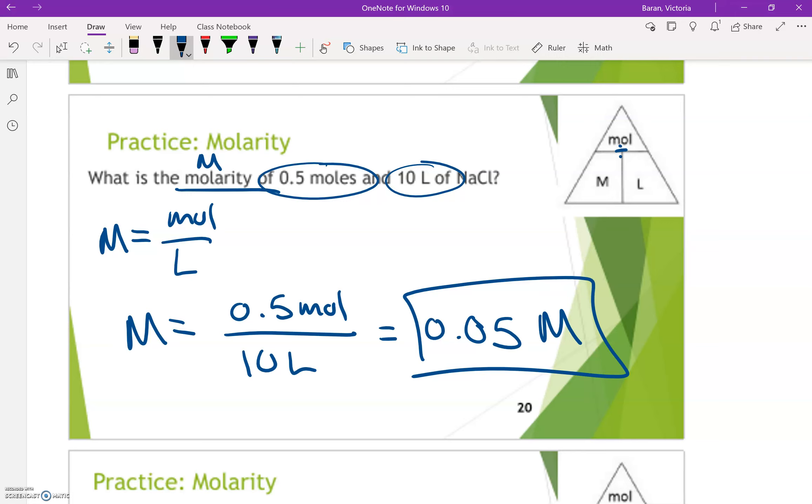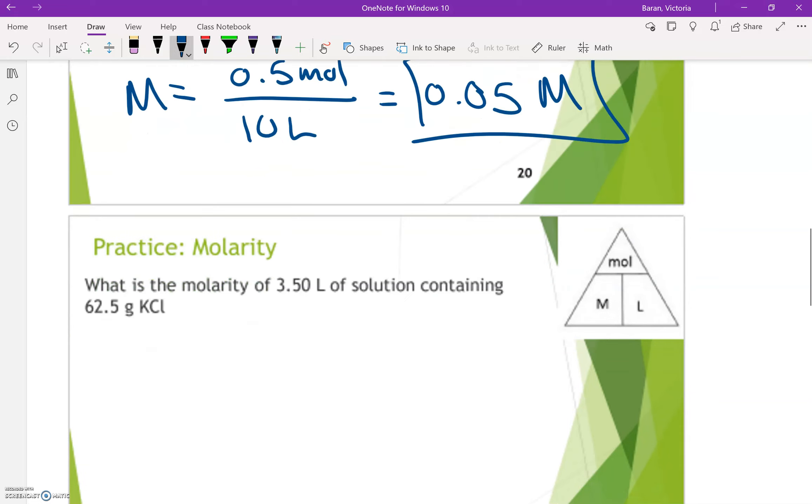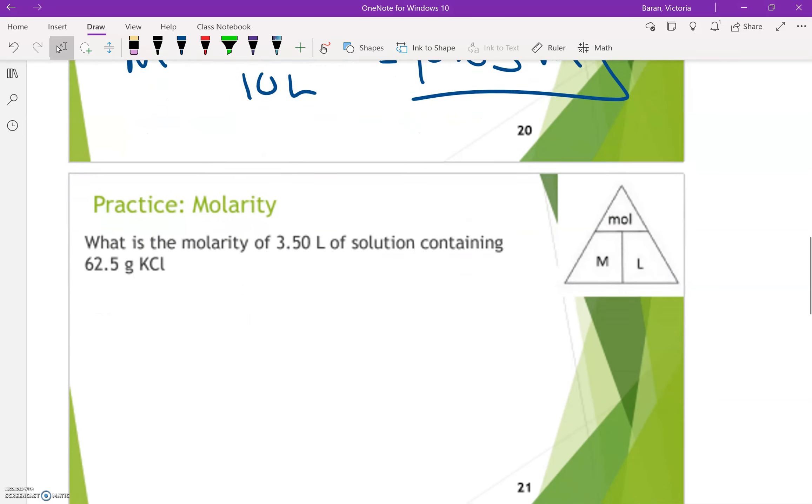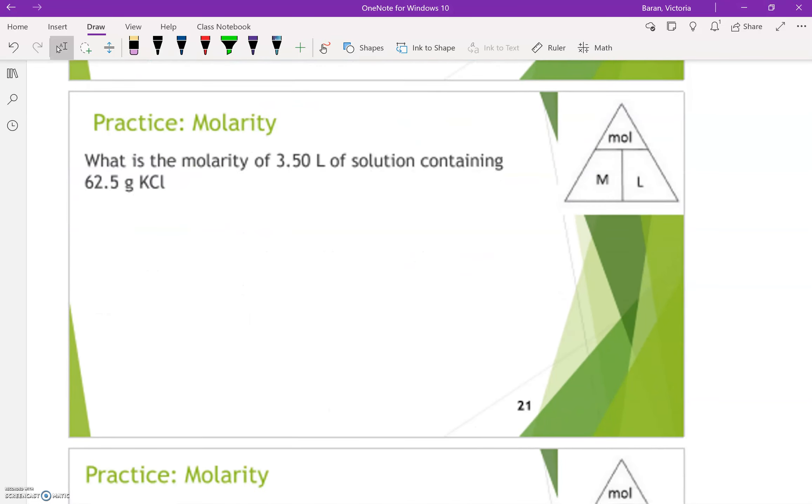What do we do if they don't give us moles or liters? So that's this next question here. What is the molarity? So we're still finding big M, which is moles divided by liters.